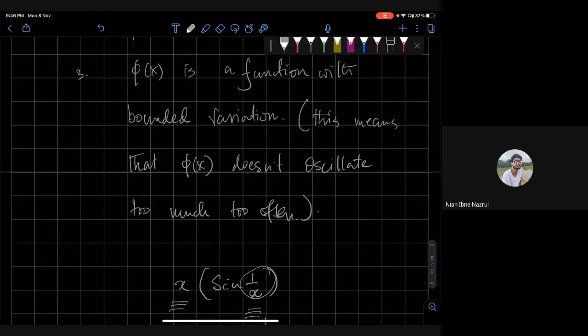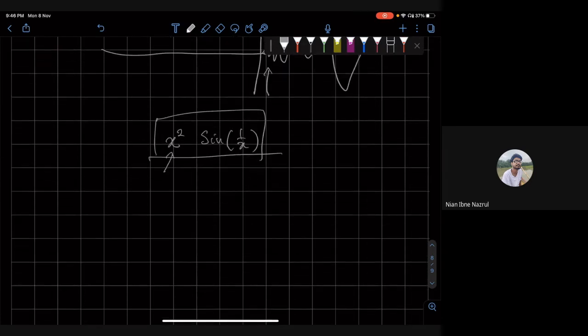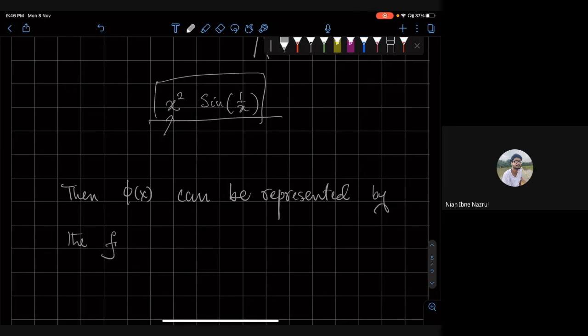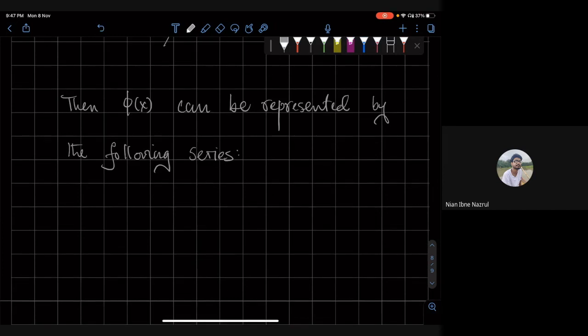Yeah, so these are the Dirichlet conditions and if these conditions are met, then what Fourier said was that phi of x can be represented by the following series.